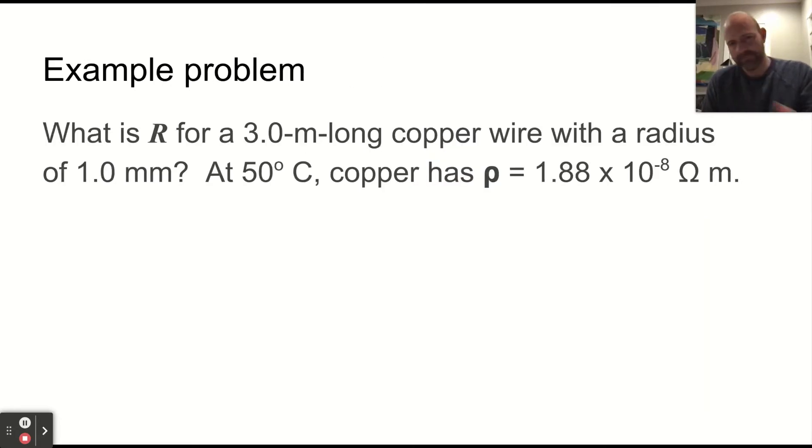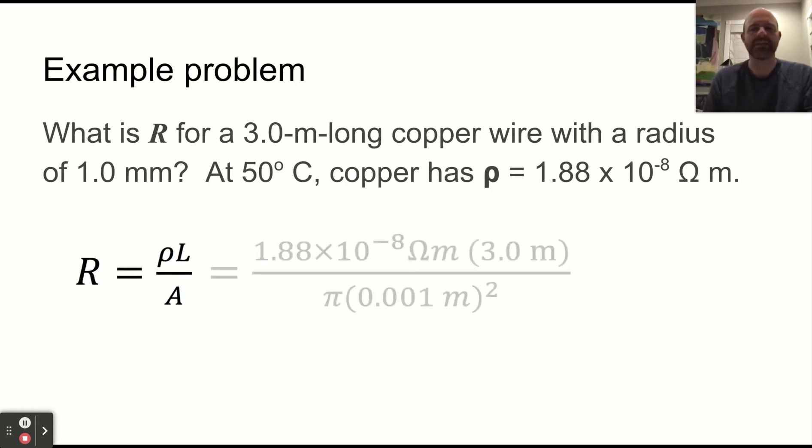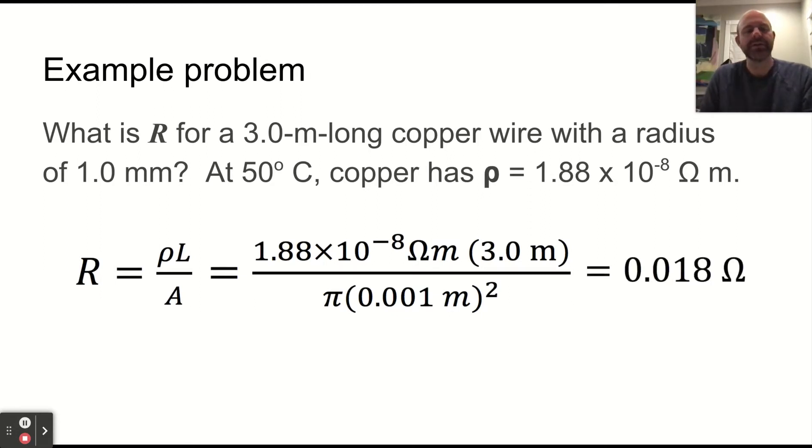Example problem. You can find the resistance based on these basic fundamental quantities. If you know the resistivity, the length and the cross-sectional area, this is a cylinder. So it's easy. It's just a circle for the area. You can calculate the resistance.